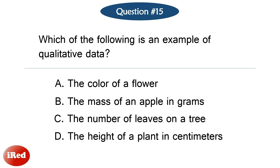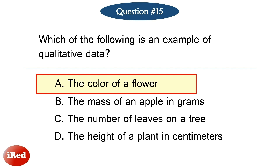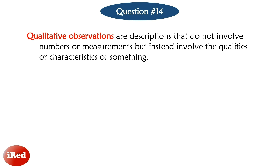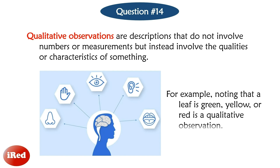Question number 15: Which of the following is an example of qualitative data? The correct answer is letter A: color of a flower. Qualitative observations are descriptions that do not involve numbers or measurements but instead involve the qualities or characteristics of something. These observations are often based on sensory descriptions such as color, texture, smell, taste, and sound. For example, noting that a leaf is green, yellow, or red is a qualitative observation — it describes the appearance of the leaf without quantifying it.